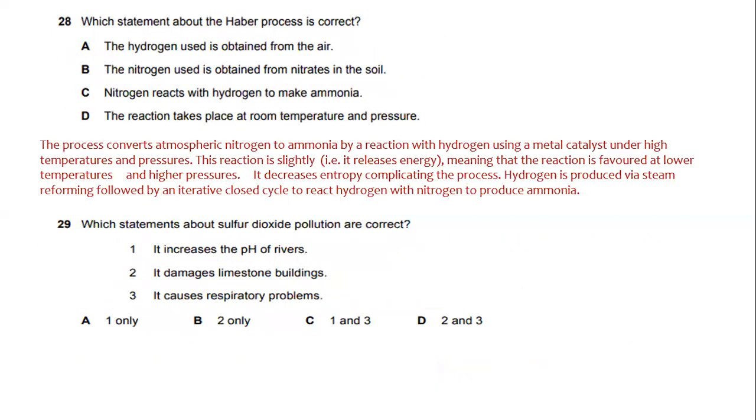Number 28. Which statement about the Haber process is correct? The Haber process converts atmospheric nitrogen to ammonia by reaction with hydrogen using a metal catalyst under high temperatures and pressures. This reaction slightly releases energy, meaning that the reaction is favored at lower temperatures and higher pressures. It decreases entropy, complicating the process. Hydrogen is produced via steam reforming followed by an iterative closed cycle to react hydrogen with nitrogen to produce ammonia.